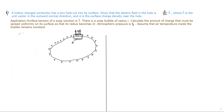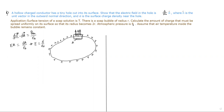Using Gauss's law, if sigma is the surface charge density and area is A, flux is only due to the outer surface, so E·A = σA/ε₀. Therefore, the electric field is equal to σ/ε₀.